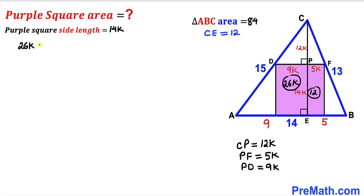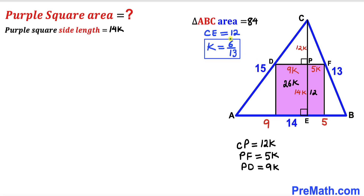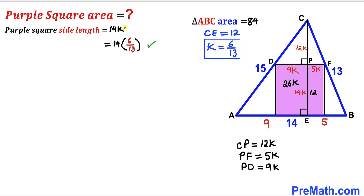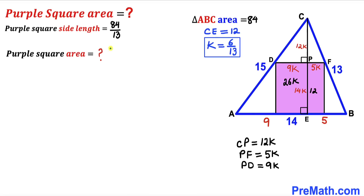Since CE also equals 12, we equate: 26k = 12. Dividing both sides by 26, k = 12/26 = 6/13. Therefore, the purple square's side length equals 14 times k = 14 times (6/13) = 84/13 units.